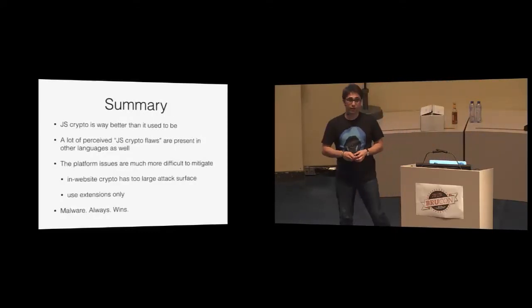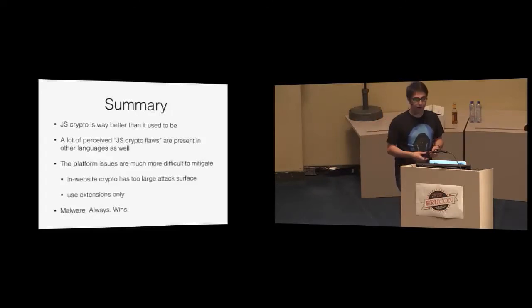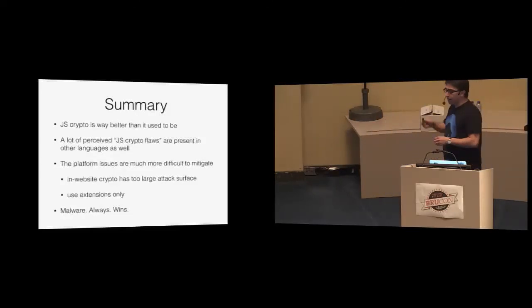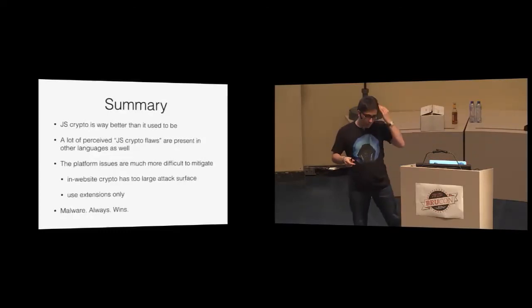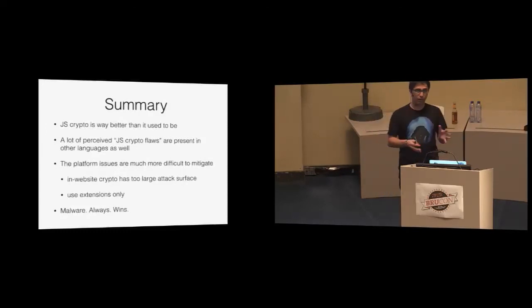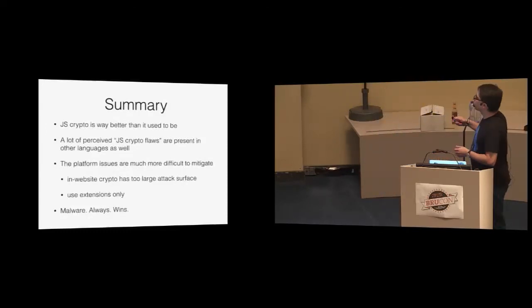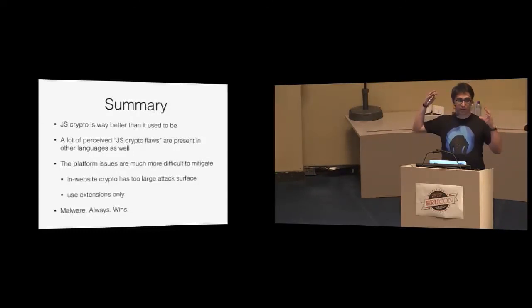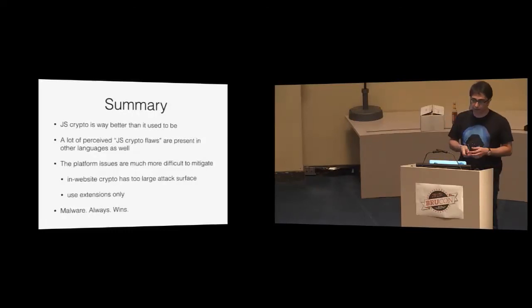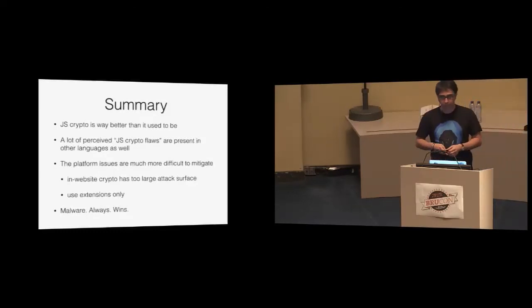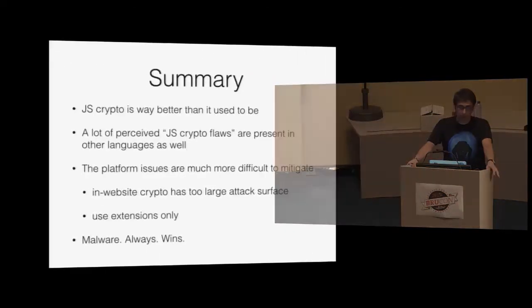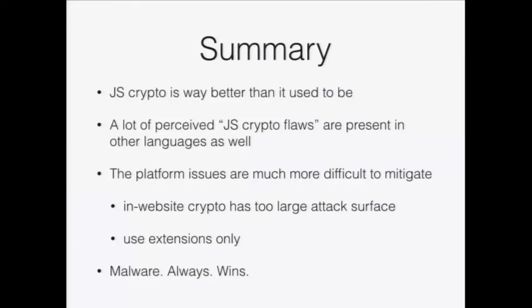Summary: JavaScript crypto is way better than it used to be, despite the examples I've just shown. If you want to understand JavaScript crypto, you always need to compare it to native crypto as well, because there are similar problems — they're just named differently. The platform issues are much harder to solve than language tricks like bit-shifting quirks. The issues with the web platform as a code execution environment are harder to solve than subtle language issues. And malware will always win — host security is always security 101. Thank you, if you have any questions I'd be happy to address them.